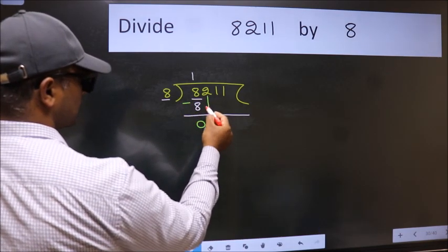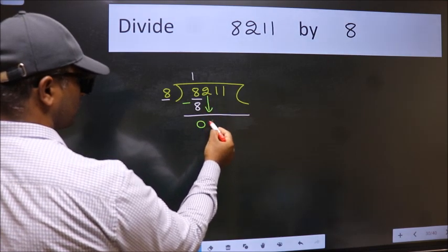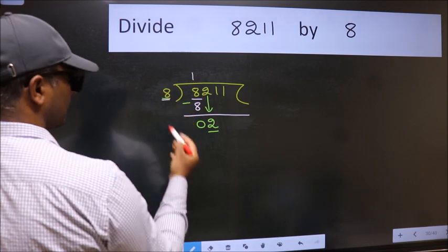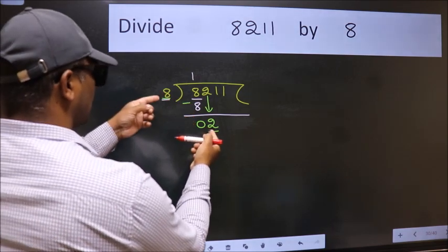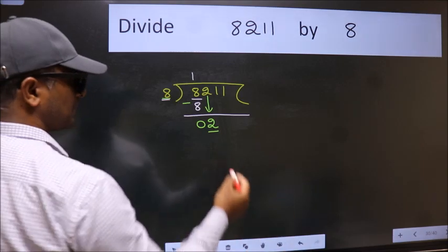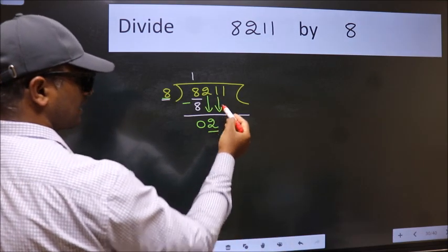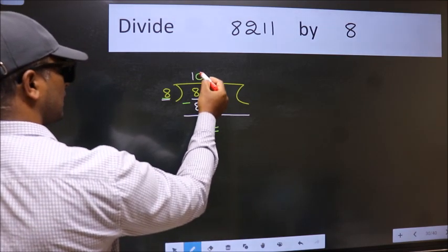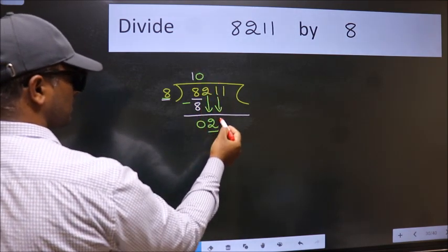After this, bring down the beside number. So, 2 down. Now, here we have 2 and here 8. 2 is smaller than 8. So, we should bring down the second number. And the rule to bring down second number is put 0 here. Then only we can bring this number down.